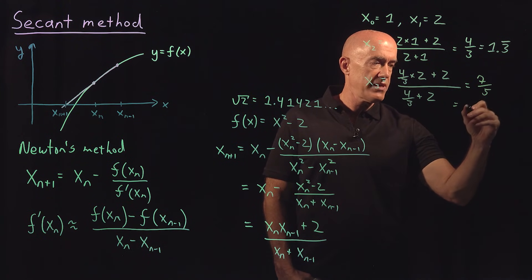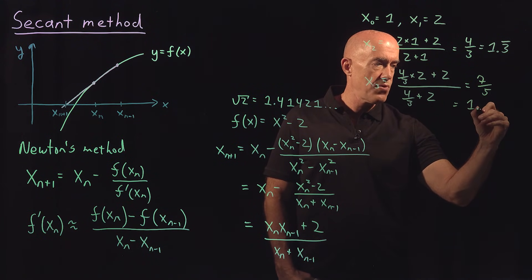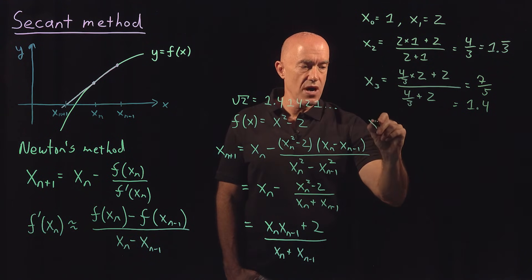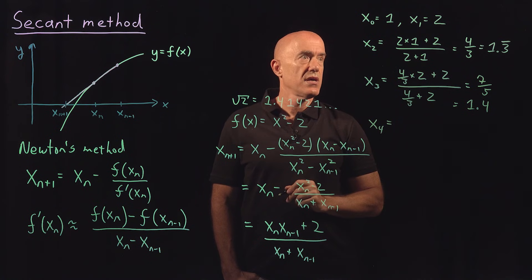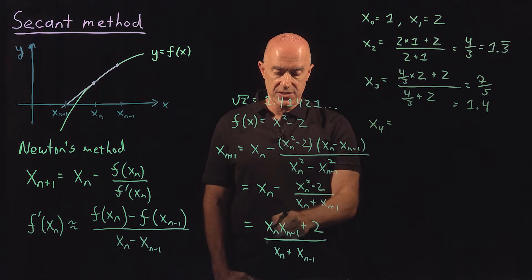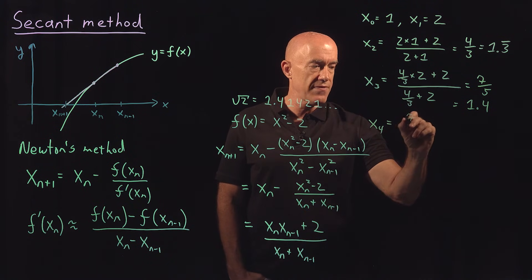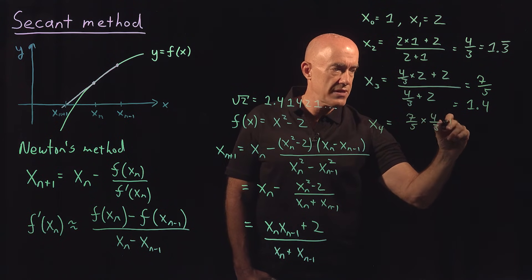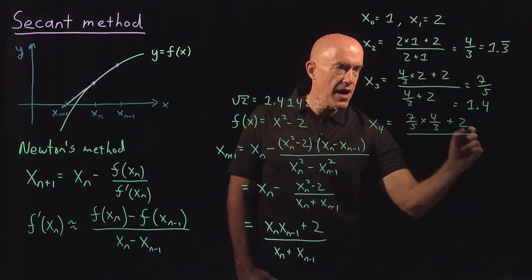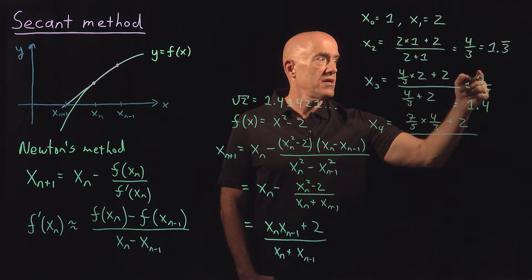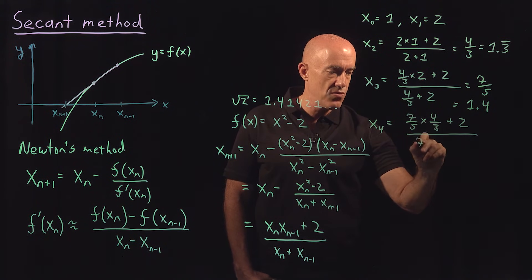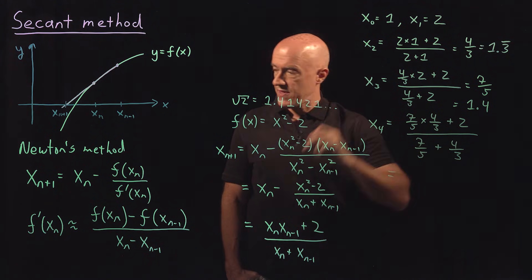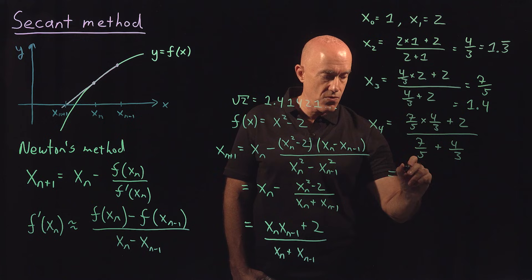Then x_4, the last one I'll compute, will be x_3 times x_2, so 7/5 times 4/3 plus 2 divided by x_3 plus x_2, so 7/5 plus 4/3. And if you put that all together, you get 58/41.